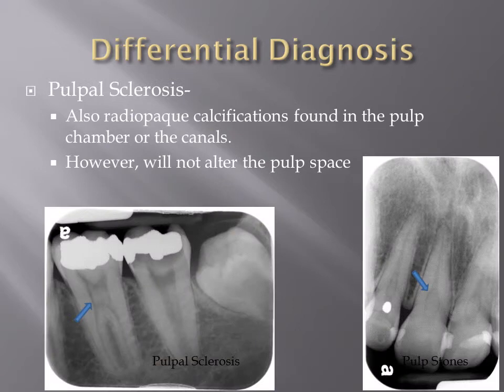The differential diagnosis for pulp stones is pulpal sclerosis, and that is the only one. Pulpal sclerosis are also radiopaque calcifications found in the pulp chamber and canals. The way to differentiate between pulpal sclerosis and pulp stones is that pulpal sclerosis will not alter the shape of the pulp space.